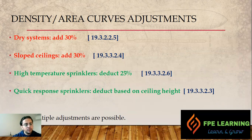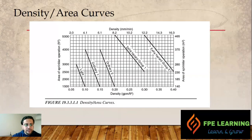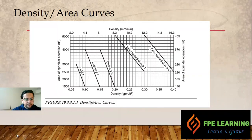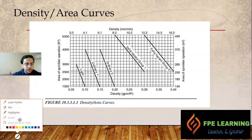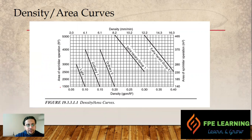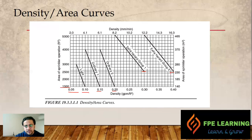All design areas we apply here are based on this curve. For light hazard we have a minimum of 1,500 square feet. For Ordinary Hazard Group 1 and 2 we also have 1,500 square feet but with different densities — 0.10, 0.15, and 0.20. For Extra Hazard Groups 1 and 2 we have a minimum of 2,500 square feet, or 230 square meters. Now let's see how we add or reduce from these base areas.